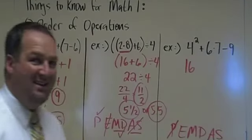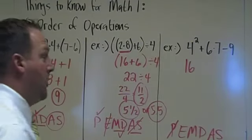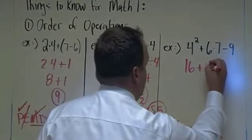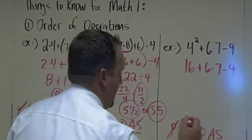Please do not put 8. That's where people mess up. It's not 4 times 2. It's 4 times 4. Bring down the rest. Plus 6 times 7 minus 9. All exponents are taken care of.